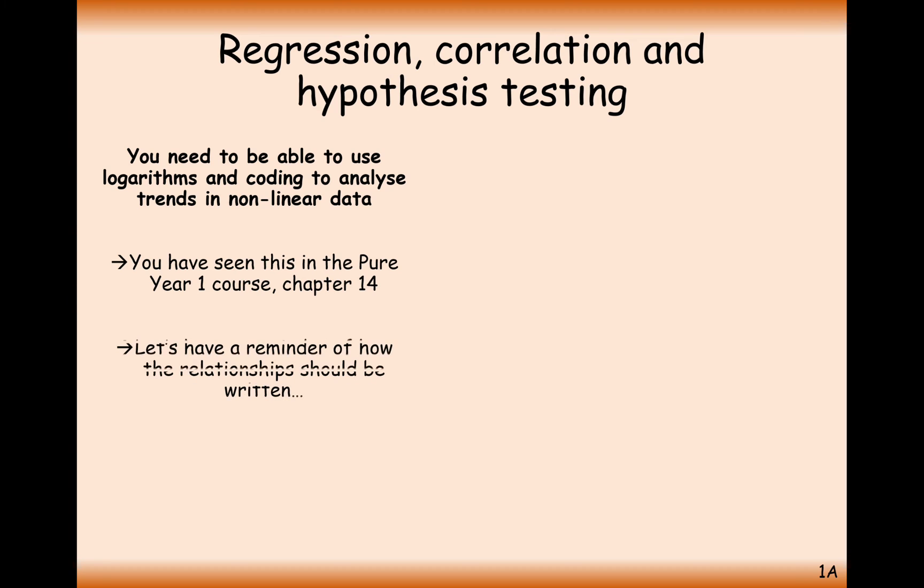The first thing we're going to need to remind ourselves about is how we can turn y equals ax to the power of n and y equals ab to the power of x into a linear model using logarithms. We saw how to do this in the first year of A-level maths in the pure textbook under the exponential chapter.